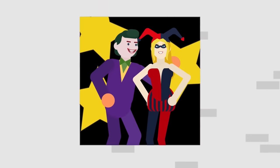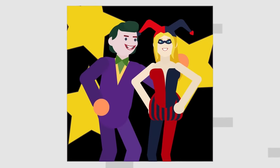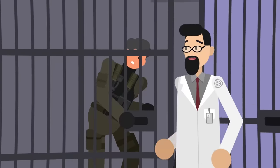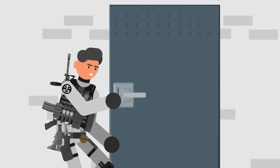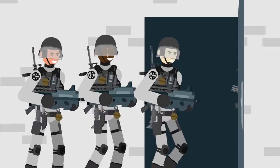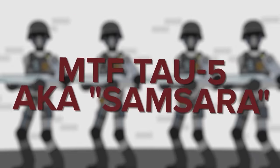MTF Sigma-66, aka 16 Tons, are basically the Foundation's own version of the Suicide Squad. They're a team made from captured members of other groups of interest who aren't particularly loyal to the Foundation, but whose very particular set of skills make up for that fact.